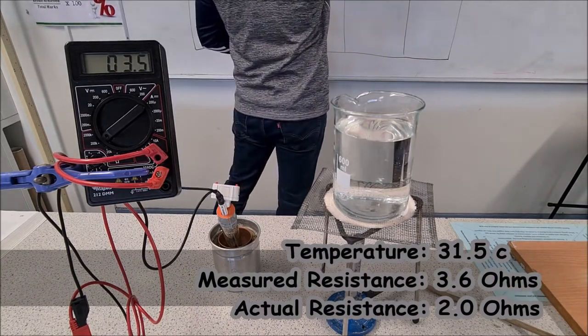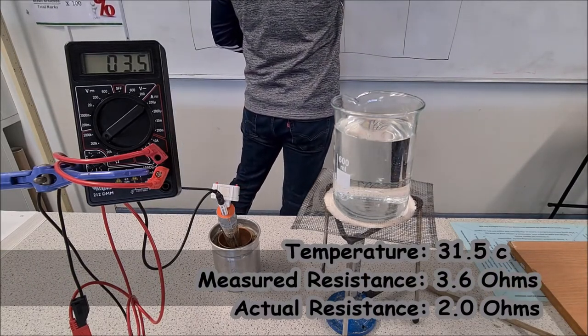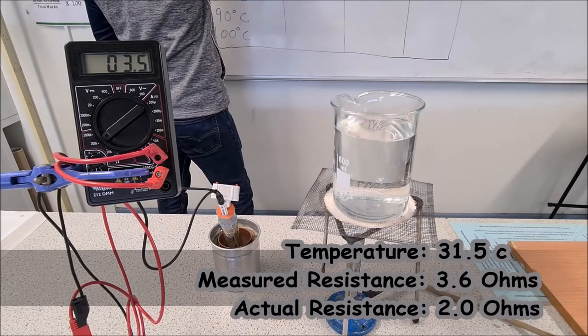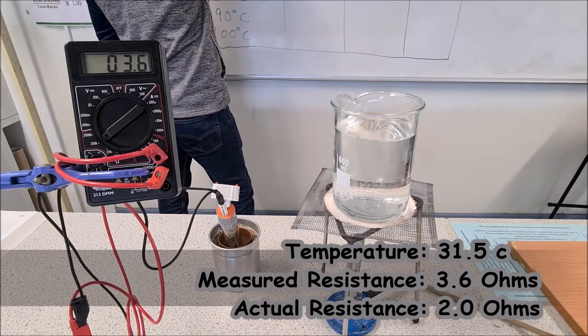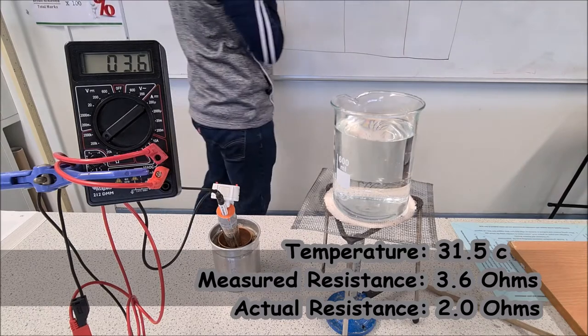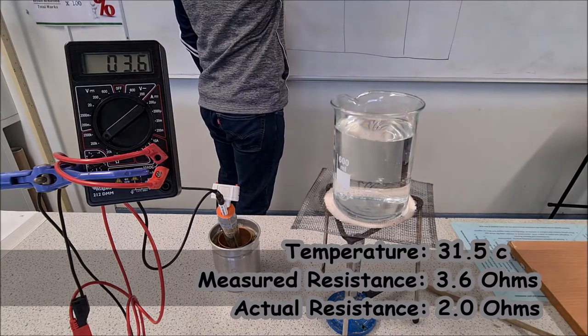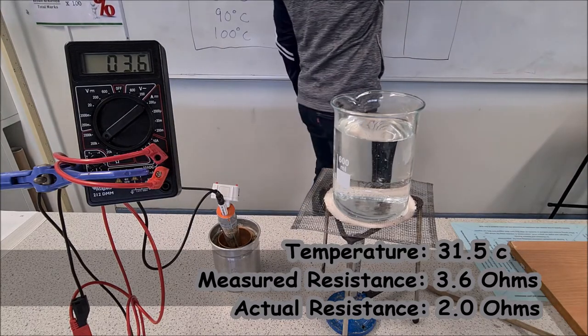So measured resistance is 3.6 ohms and the temperature was 31.5 degrees Celsius. So the actual resistance there is 2 ohms.